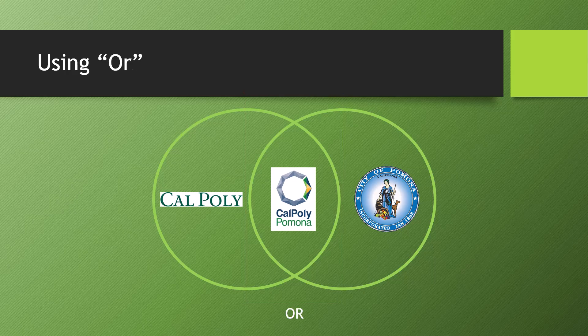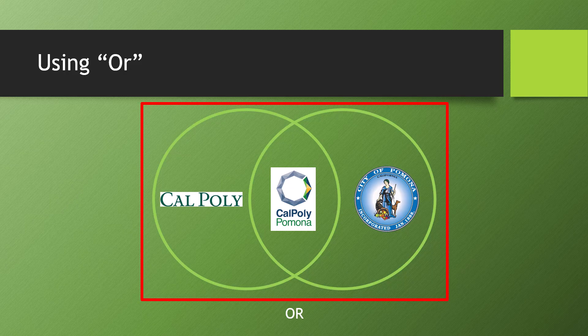The next Boolean operator is OR. OR tells the database that you're flexible about what results you get — you want results containing 'Cal Poly,' results containing 'Pomona,' and results containing 'Cal Poly Pomona.' Using OR greatly expands your results. This is useful when you have a variety of terms — such as treatment, intervention, and therapy — that are all used to describe the same thing in the literature. OR allows you to look for all three at the same time rather than doing three separate searches, saving time. However, OR can blow up your search results, so use it carefully.